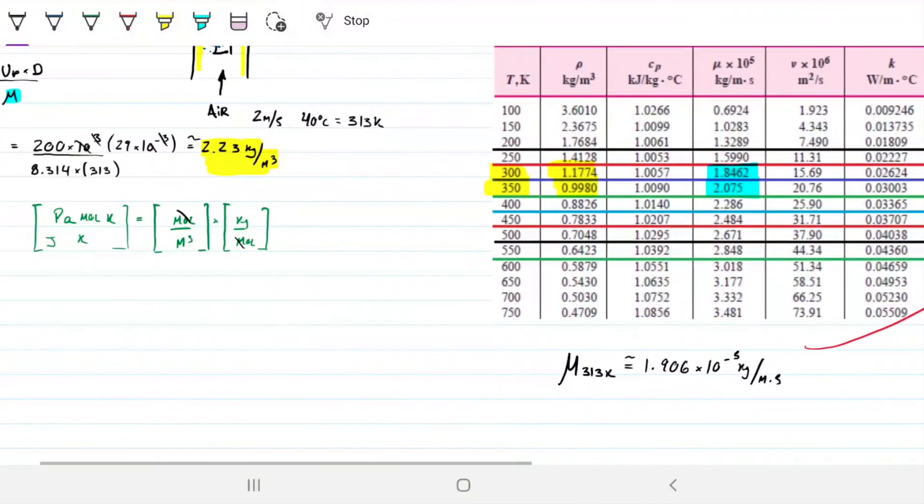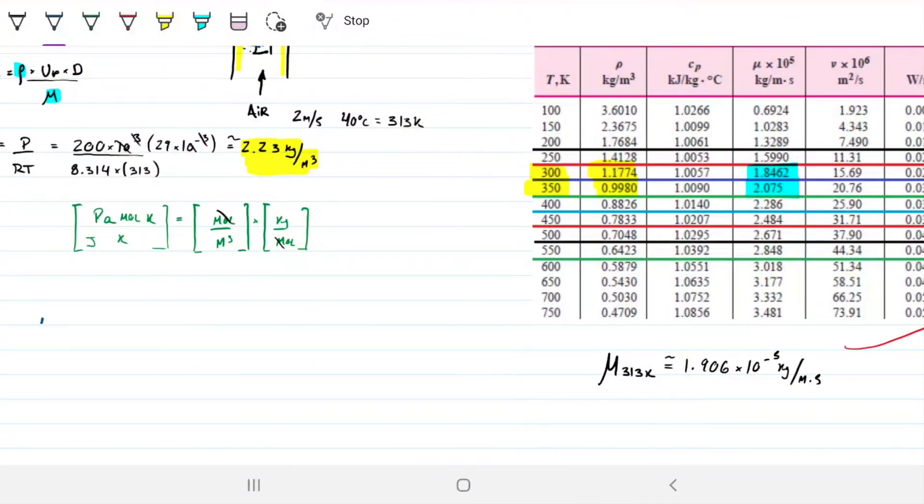With those two values, now I can calculate Reynolds. My Reynolds is 2.23 multiplied by 2 meters per second, multiplied by 200 times 10 to the minus 3 meters, which is the diameter of my falling film evaporator, divided by 1.906 times 10 to the minus 5, which gives me approximately 46,807. No units there.